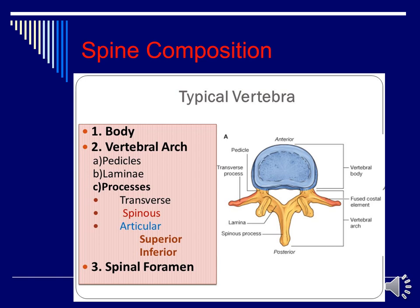For our typical vertebra, as covered in the cervical spine lecture, we have two main components: the body anteriorly and the vertebral arch posteriorly. The arch is attached to the body via the pedicles on either side at the posterior-lateral aspect of the body. The lamina acts as a bridge between the transverse process and the spinous process. You have the superior and inferior articular processes sitting between the transverse process and spinous process, extending superiorly and inferiorly. The vertebral foramen or spinal foramen is the opening created by the fusion of the body to the pedicle, allowing the spinal cord to traverse down the spinal canal.